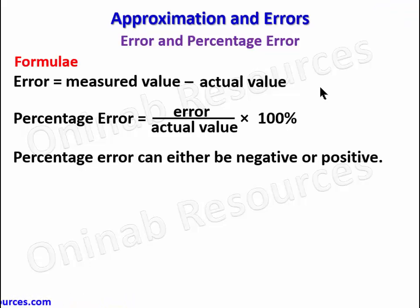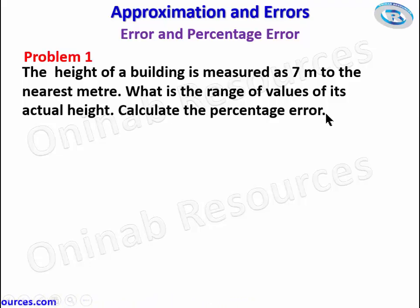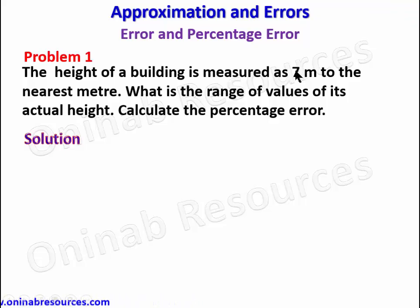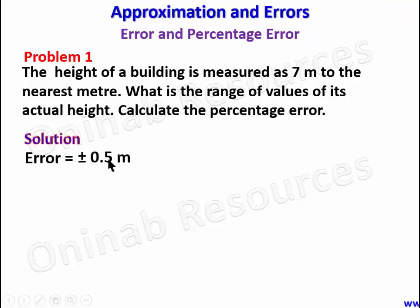If the error is negative and it is not specified, it is still acceptable. We go to problem one: the height of a building is measured at seven meters to the nearest meter. What is the range of values of its actual height? Calculate the percentage error. The first part is similar to our first video so check it out. Our measured value here is seven meters, which is the approximated value to the nearest meter. The error is obtained from this: the smallest unit is one meter, divided by two, which gives 0.5 — so our error is plus or minus 0.5 meters.